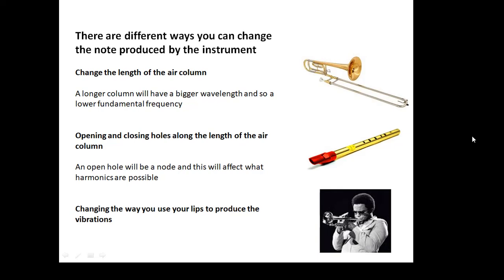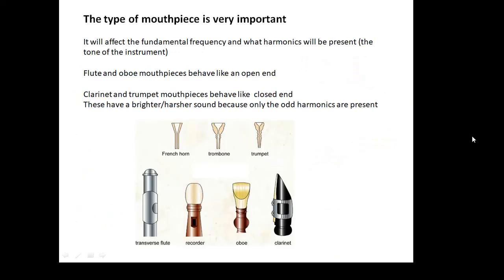Also, if you're a very good trumpet player, you can do clever things with your lips which will affect the notes and harmonics you get. Another factor is the type of mouthpiece — this will affect the fundamental frequency and also what harmonics you get. There are some types of mouthpiece which act like an open end. A flute and oboe mouthpiece apparently behave like an open end, whereas a clarinet and trumpet mouthpiece behave like a closed end. Because you only get the odd harmonics, they have a brighter, harsher sound.